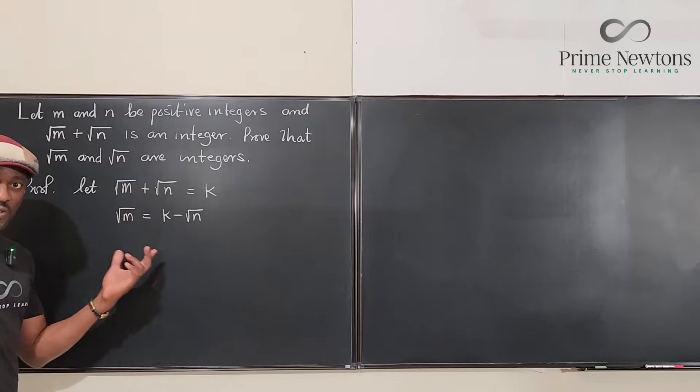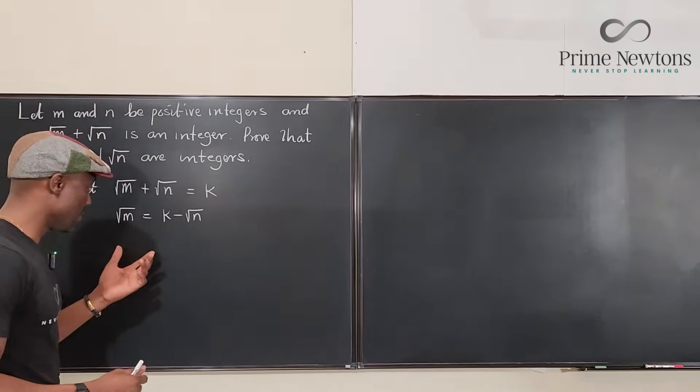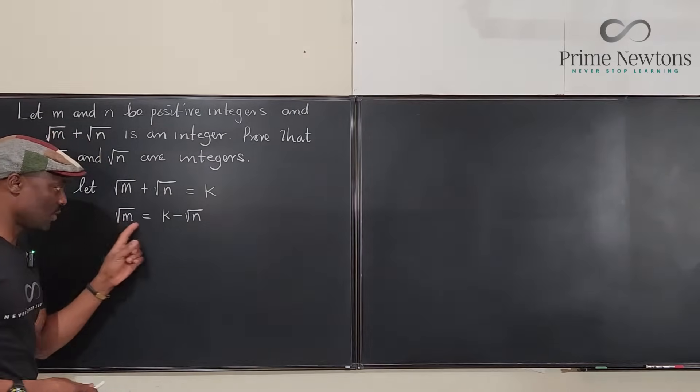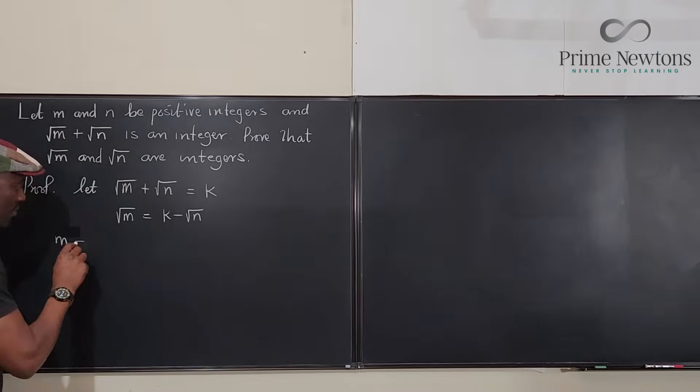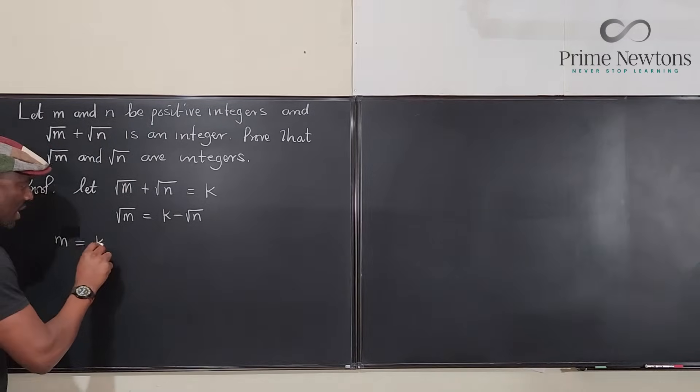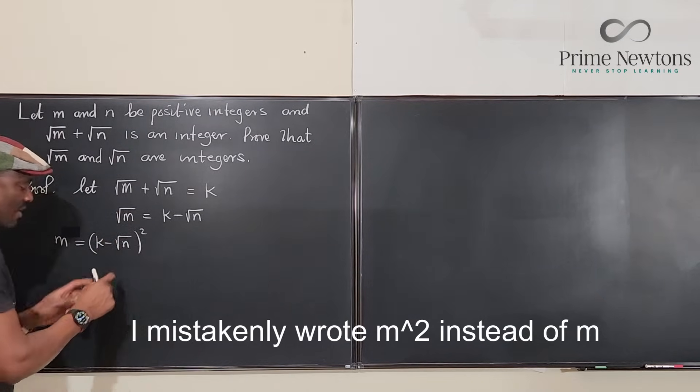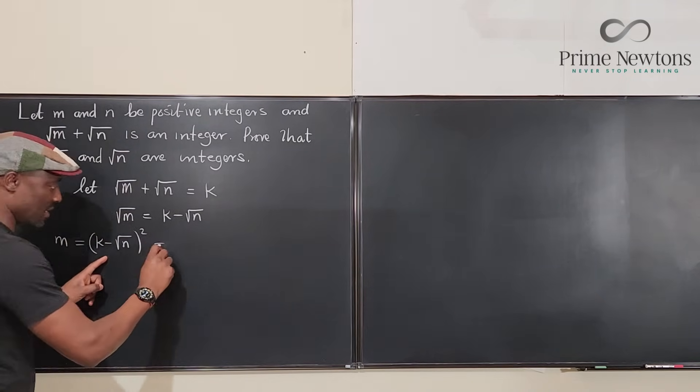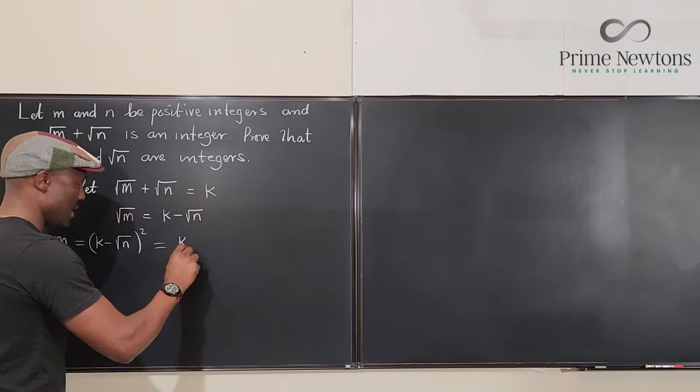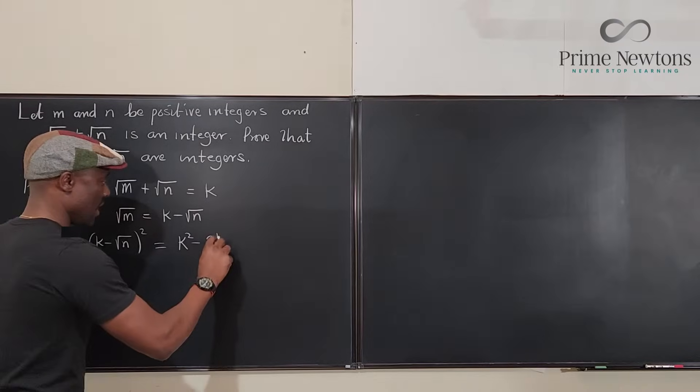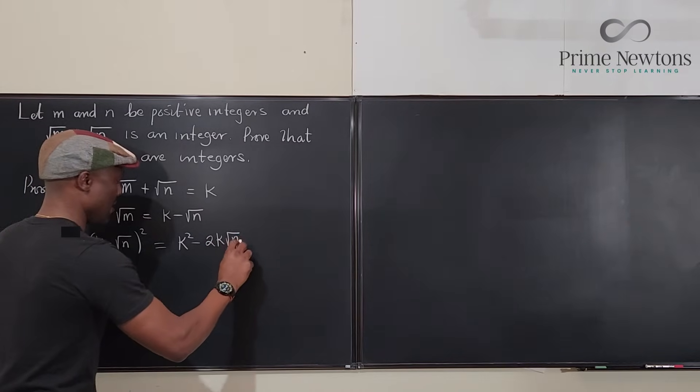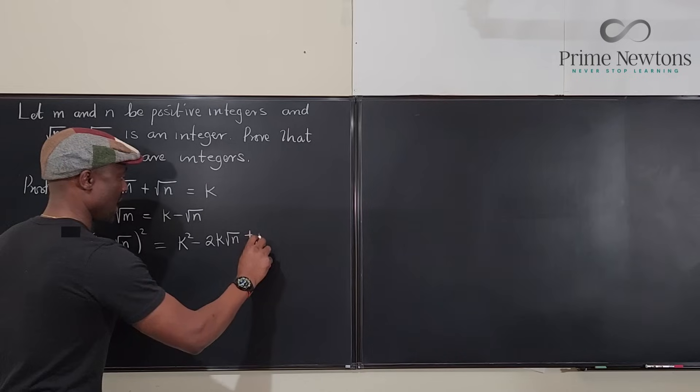Now typically when you want to solve a square root equation you square both sides. So if we square both sides we're going to end up with m = (k - √n)². If we square this we know our answer is going to be k² - 2k√n + n.